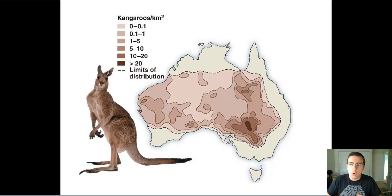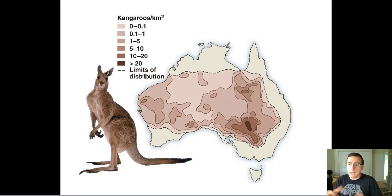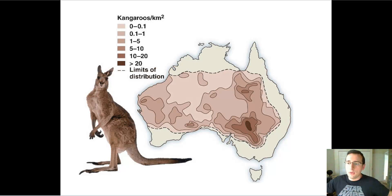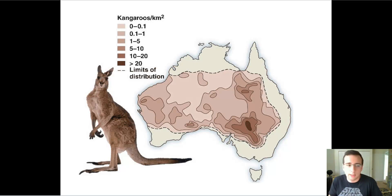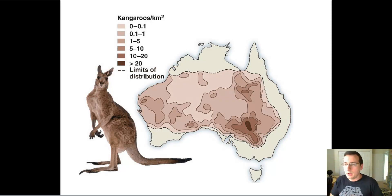This will help determine where animals live. As world conditions change, animals may be able to adapt depending on the breadth of their fundamental niche. But if the animal is very specific and has a very narrow fundamental niche, it doesn't have a lot of tolerance and will die very quickly if changes in the environment occur.